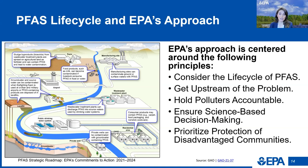EPA's approach towards PFAS takes this uniqueness into account and is centered around five principles. First, consider the life cycle of PFAS, including their unique properties, the ubiquity of their uses, and the multiple pathways for exposure. Second, get upstream of the problem — EPA is bringing a deeper focus to preventing PFAS from entering the environment in the first place. Third, hold polluters accountable for their actions and for PFAS remediation efforts. Fourth, ensure science-based decision-making. And fifth, prioritize protection of disadvantaged communities, ensuring that they have equitable access to solutions.